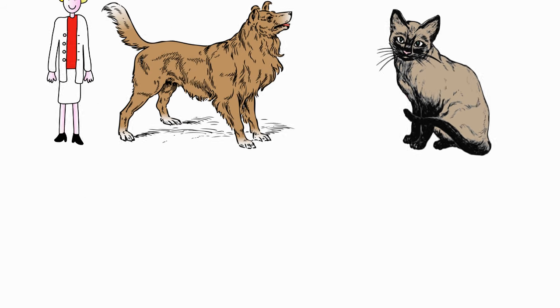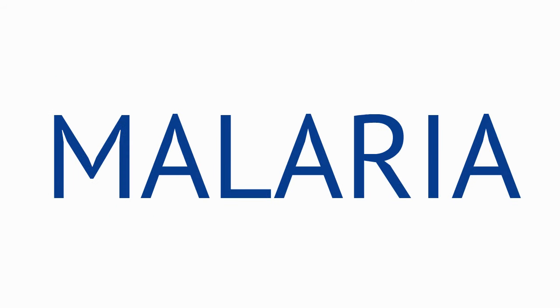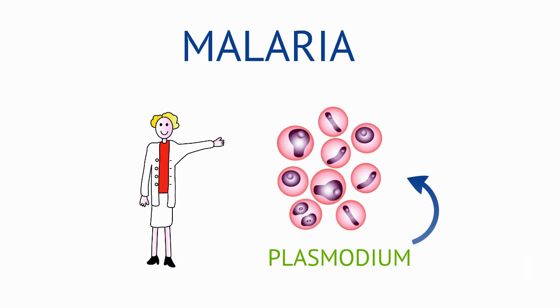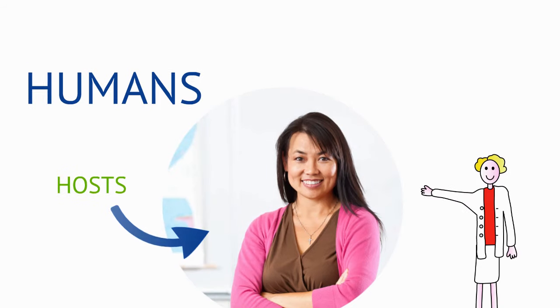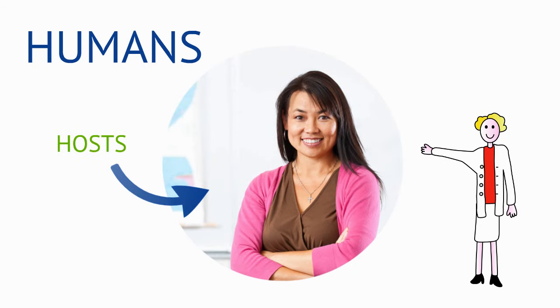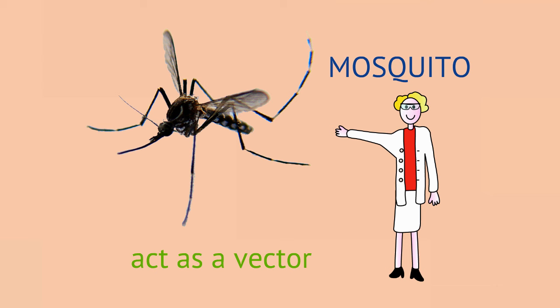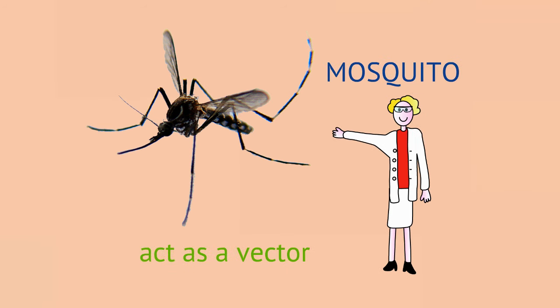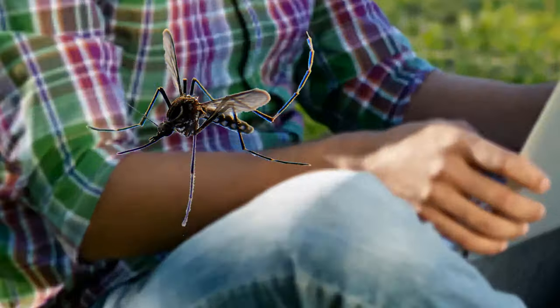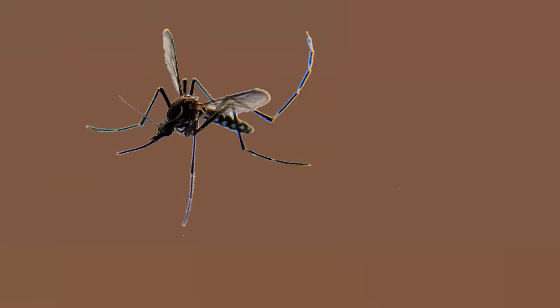Many parasites spread diseases such as malaria. The malaria parasite is called Plasmodium. Humans are the host that Plasmodium feeds on. Mosquitoes inject the Plasmodium parasite into the bloodstream, and in doing so they act as a vector for the disease, spreading malaria into another organism without being affected by it.